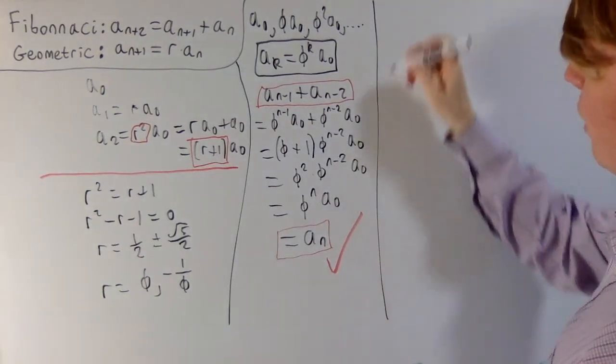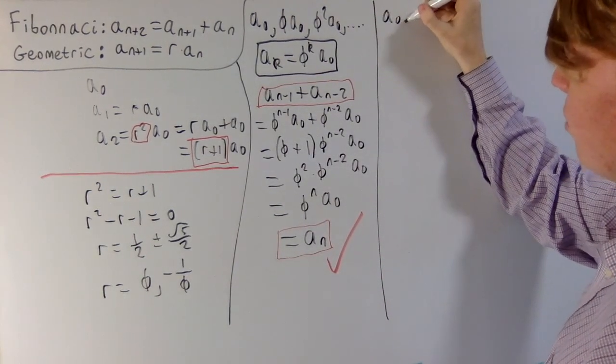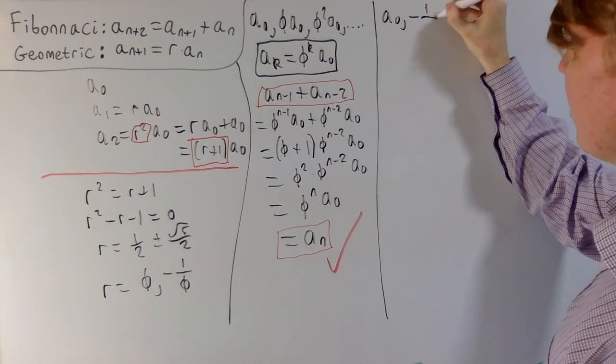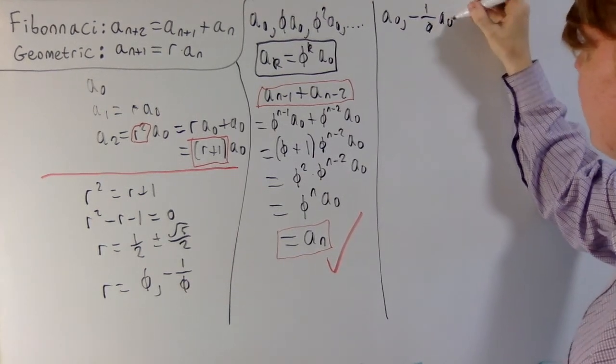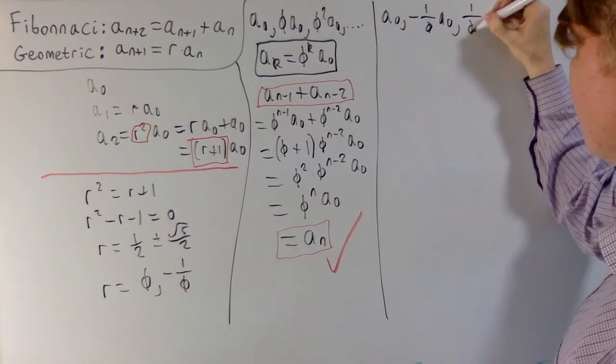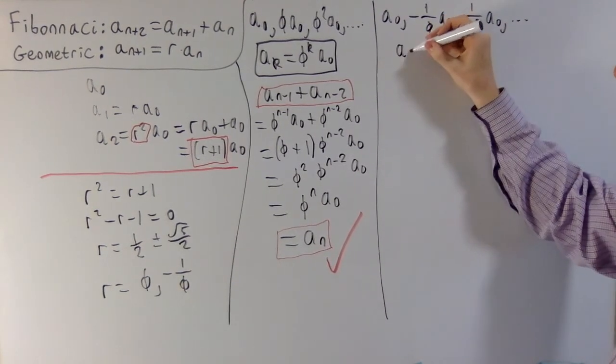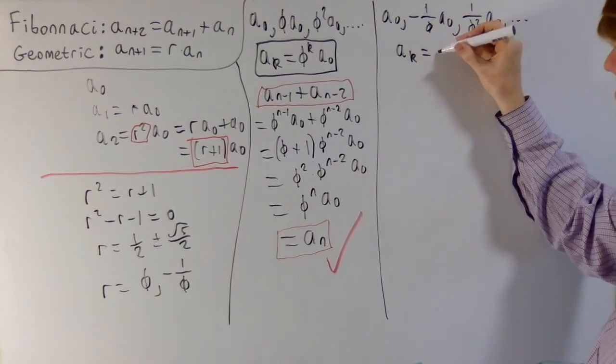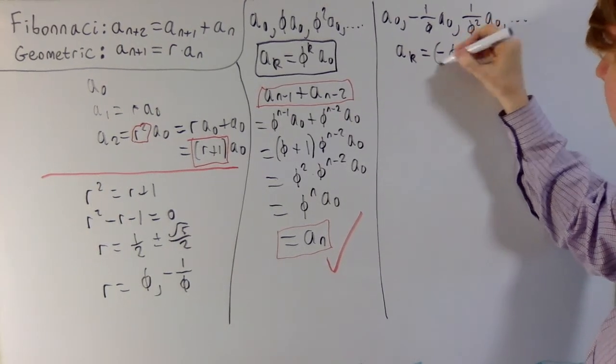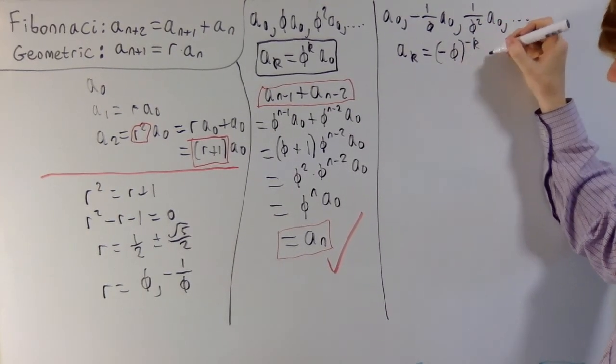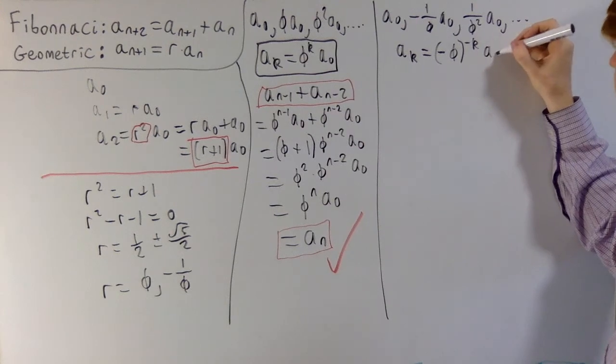So let's have a look now at the other example. So you start with any a0, and then you have negative 1 over phi a0, and your next term is 1 over phi squared a0, and so on. So what we're saying here is our kth term, this is negative phi to the power of negative k, multiplied by your initial term.